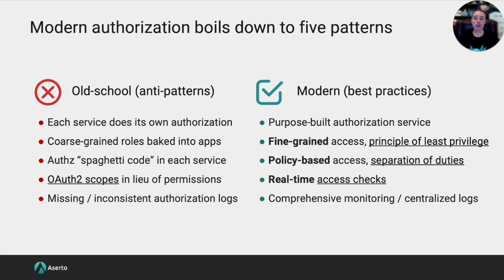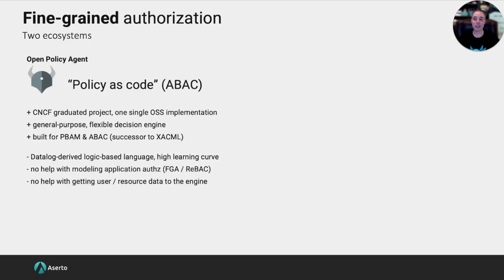Let's focus on the three middle ones: fine-grained, policy-based, and real-time — the most important characteristics of modern authorization. First, let's start with fine-grained authorization. We now see two ecosystems emerging in the cloud-native landscape. The first one is based on the Open Policy Agent project. I like to call this camp the policy-as-code camp. They're focused on ABAC — attribute-based access control — as a model.